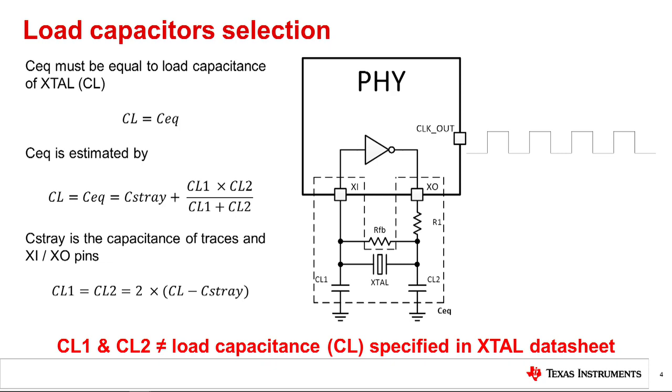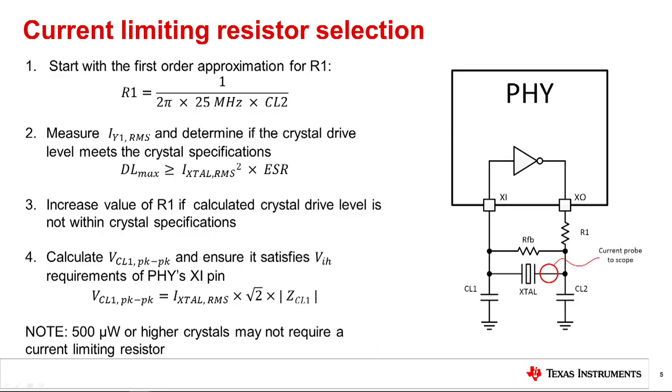To reiterate, the value for the individual load capacitors will not equal the load capacitance specified in the crystal datasheet. Current limiting resistor selection: a current limiting resistor R1 will be needed with a TI PHY if the crystal selected has a maximum drive level less than 500 microwatts. Let's go through a step by step approach to determine the value of R1.